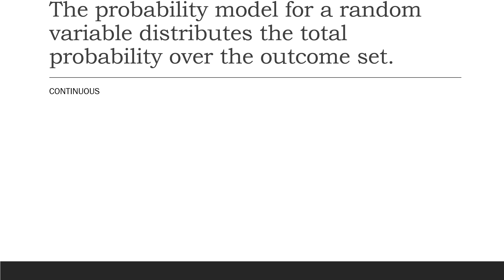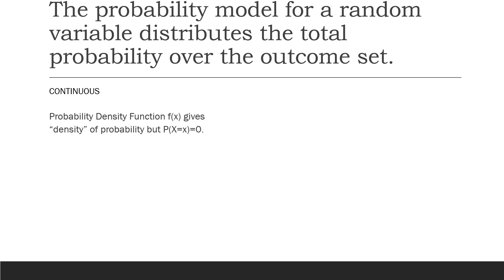Probability models also distribute the total probability over the outcome set for continuous random variables, but they do it slightly differently. For continuous random variables, instead of a probability mass function, there's a probability density function f(x), which is a smooth curve that gives the density of probability around each value x, but is not equal to the probability that x takes on that value. Because there are infinitely many possible values in a tiny interval, the probability that x takes on any exact value is zero for all values of x, even ones that are in the outcome set.